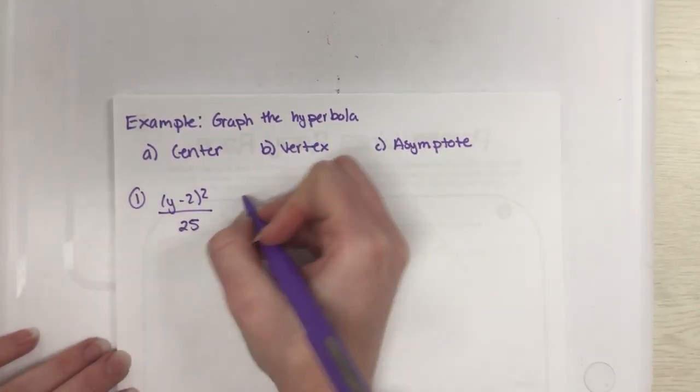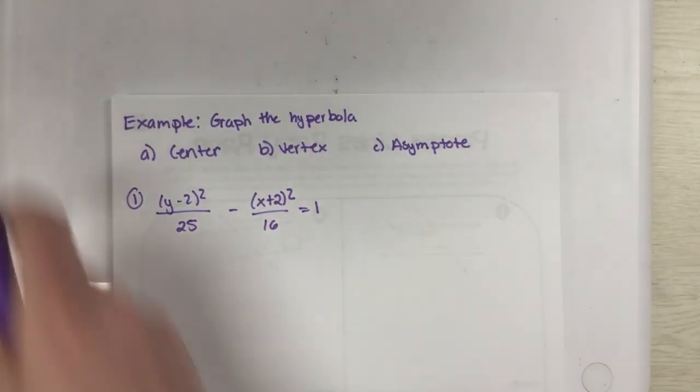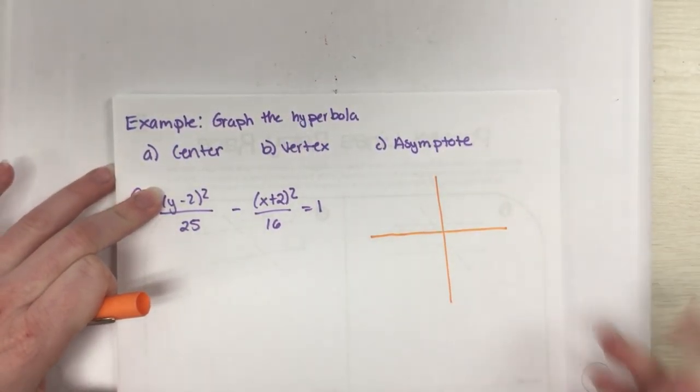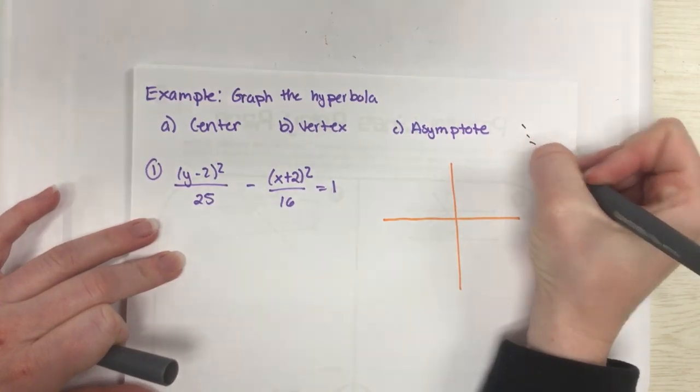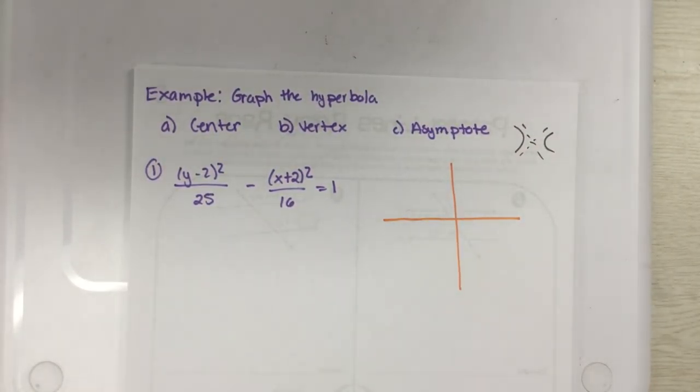The problem we are going to do is (y-2)² over 25 minus (x+2)² over 16 equals 1. The center usually is not too bad. I'm going to go ahead and just sketch a graph here real quick.